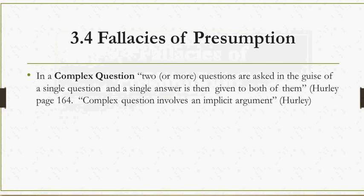Our next fallacy is complex question. According to Hurley, in a complex question, two or more questions are asked in the guise of a single question and a single answer is then given to both of them. Even though a complex question is a question, it really isn't an argument — there is an implicit or hidden argument assumed within the question. Typically there are two answers, and depending on how the person answers, they commit themselves to a certain argument.